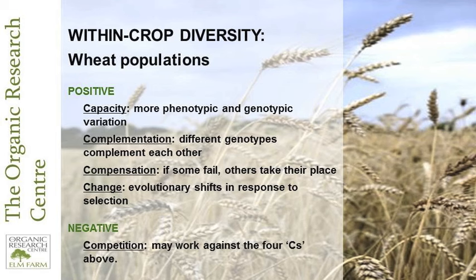Because this is a population — a crowd — it can change over time. You've got lots of genes in there rather than the smaller amount you get in a variety. However, there is a negative, which is the other side of complementation: competition. They can compete with each other.